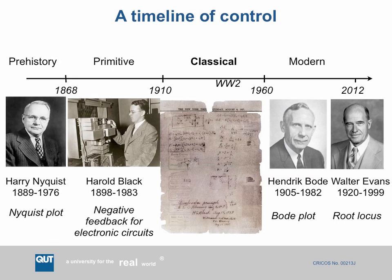The next interesting era is the classical era. Four gentlemen contributed greatly to classical control theory. Harry Nyquist is known for the Nyquist plot, a graphical technique for control system design. Hendrik Bode is known for the Bode plot. Evans invented the Root Locus diagram. Harold Black, the second from the left, is famous for inventing the concept of negative feedback for electronic circuits in 1927 — one of the really important underlying principles in control theory, where you take the difference between the output and the desired value and feed that back in a closed loop.